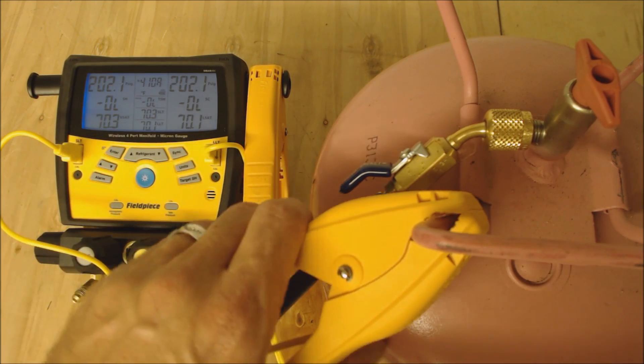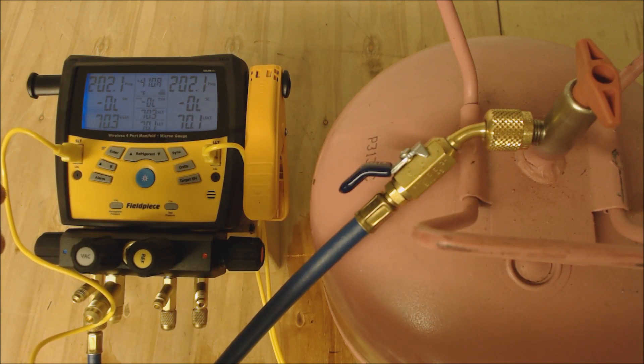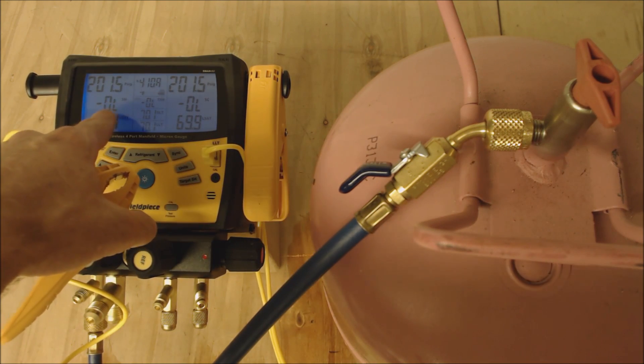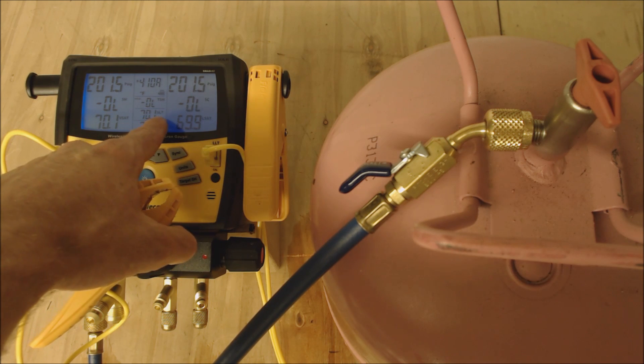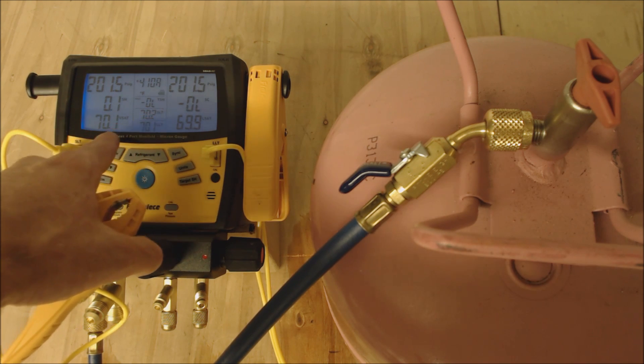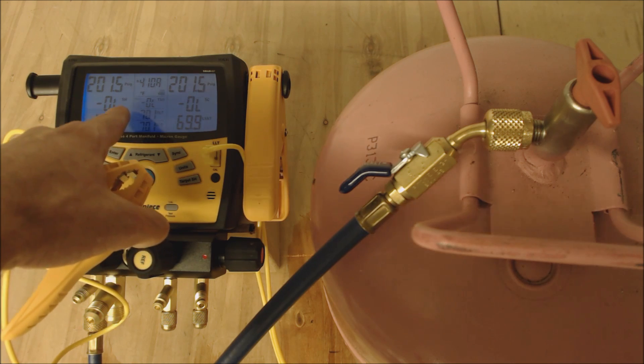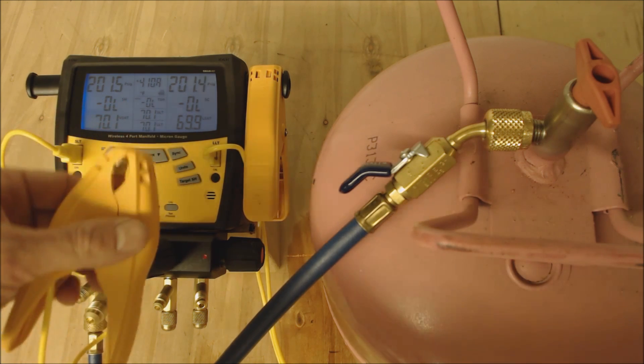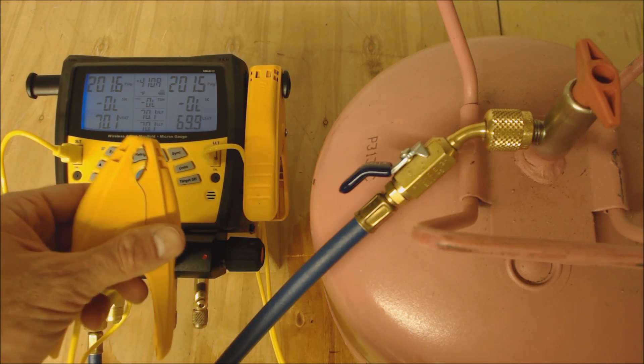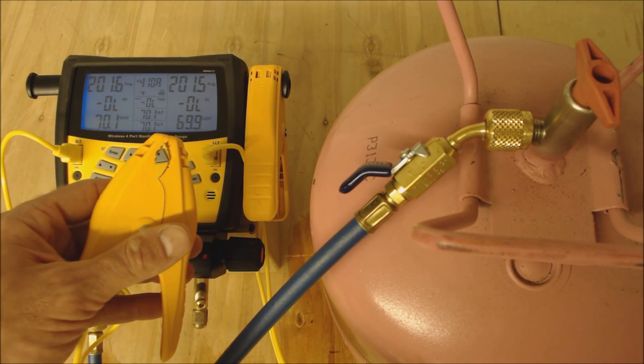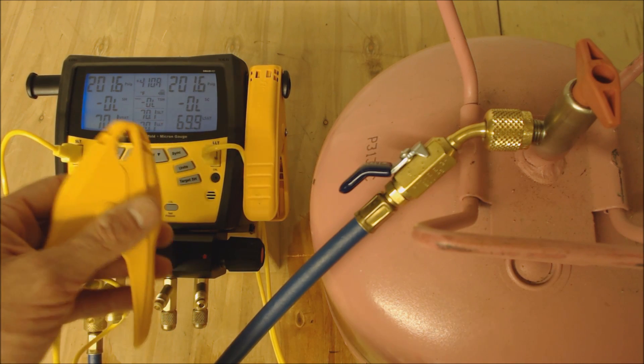You see it says negative OL here. What that means is it might be 0.1 off from the temperature. This is reading superheat and it may even be just from my breath as I'm breathing on this clamp and putting heat on it.